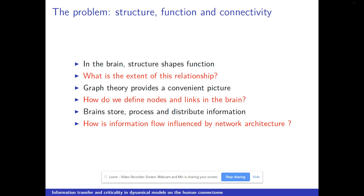What is the extent of this relationship? Is this a one-to-one relationship or not? We have seen that graph theory provides a convenient picture of many complex systems, and the brain is no exception. We also saw last time how we define nodes and links in the brain. And we know that brains store, process, and distribute information — so we could ask ourselves: how is information flow influenced by network architecture?